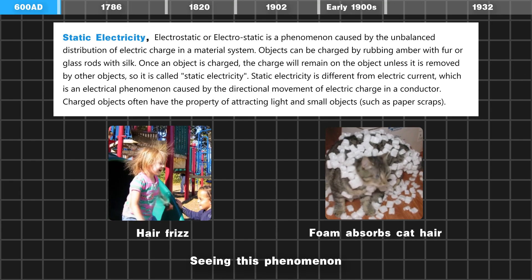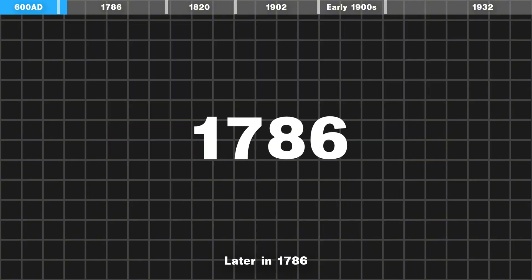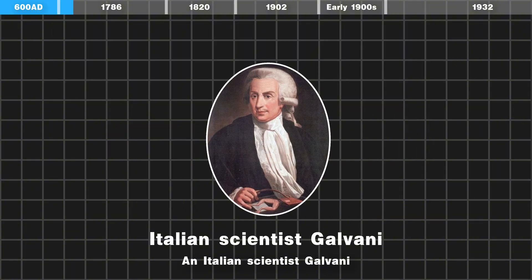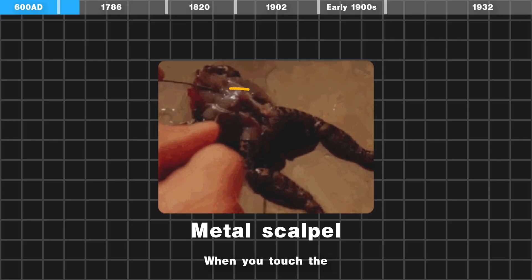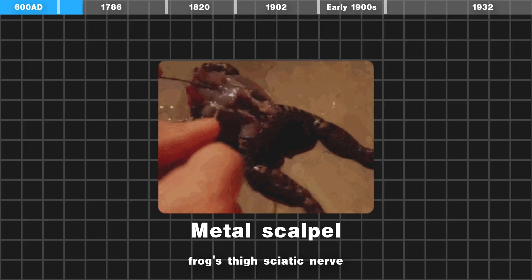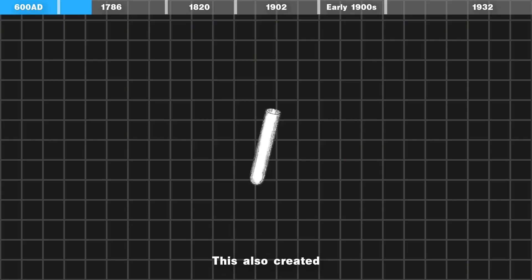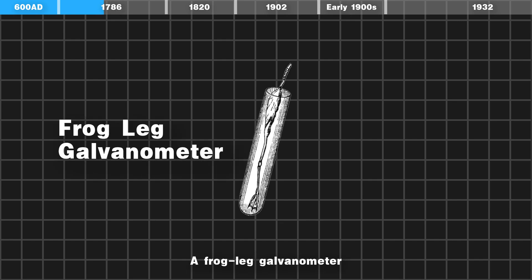Later, in 1786, an Italian scientist Galvani found that when a metal scalpel touches a frog's sciatic nerve, the frog's legs twitch. This created the first device to test electricity: the frog leg galvanometer.